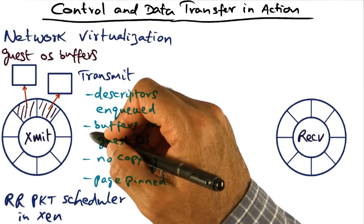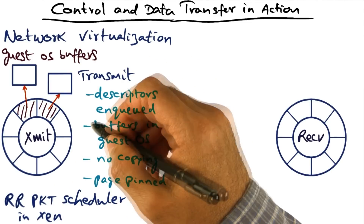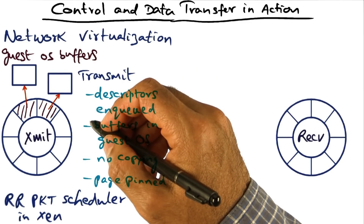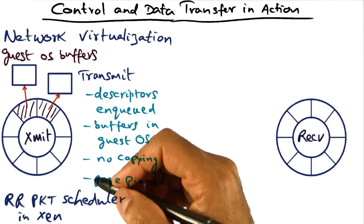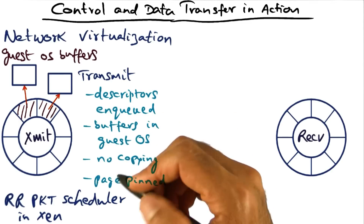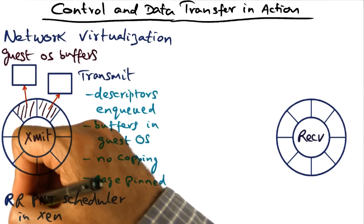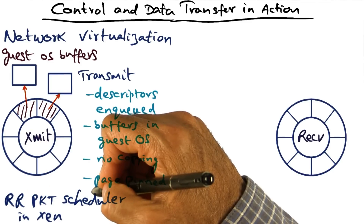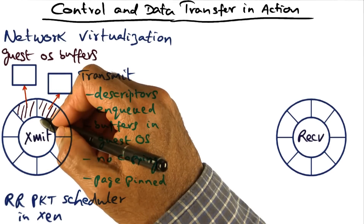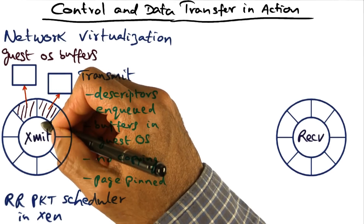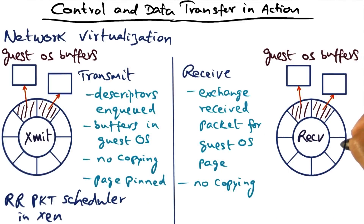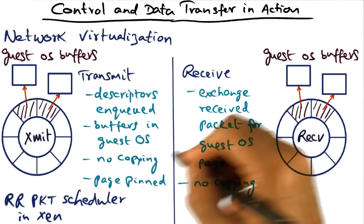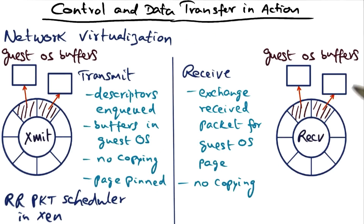This shows the interaction of one guest operating system with Xen. Of course, more than one VM may want to transmit, and what Xen does is adopt a round-robin packet scheduler in order to transmit packets from different virtual machines. Receiving packets from the network and passing them to the appropriate domain works exactly similar to what was described for transmission, except in the opposite direction.